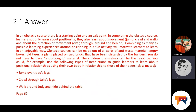Children themselves can be the resources — for example, when they use their bodies. You could use the following types of instructions to guide learners to learn about positional relationships using their own body in relation to those of their peers: jump over Jabu's legs, crawl through Jake's legs, walk around Judy, and hide behind the table. All this information is on page 69. Students, you are required here not to use the examples given in the study guide, but to create your own examples.